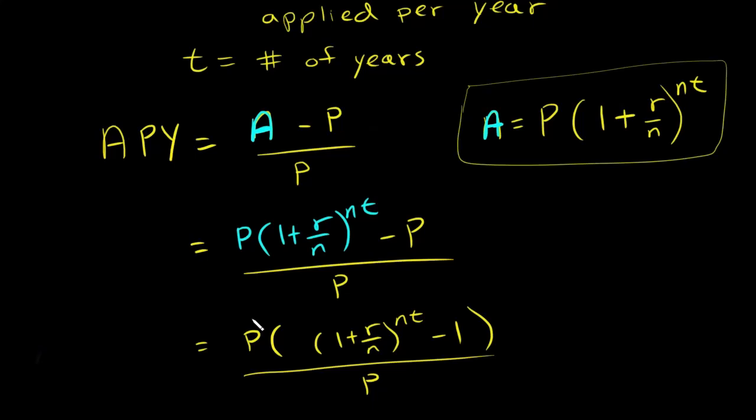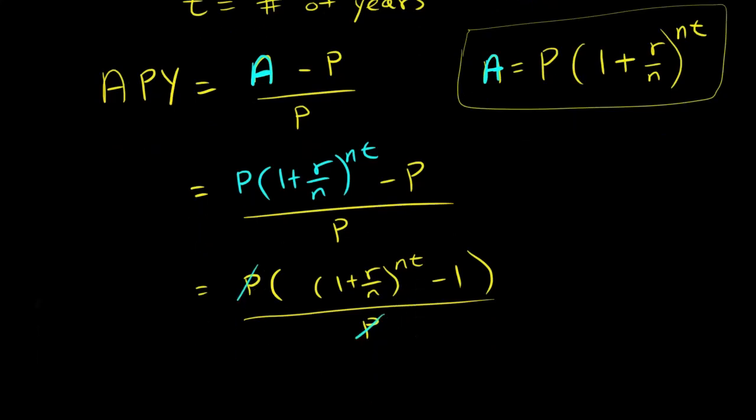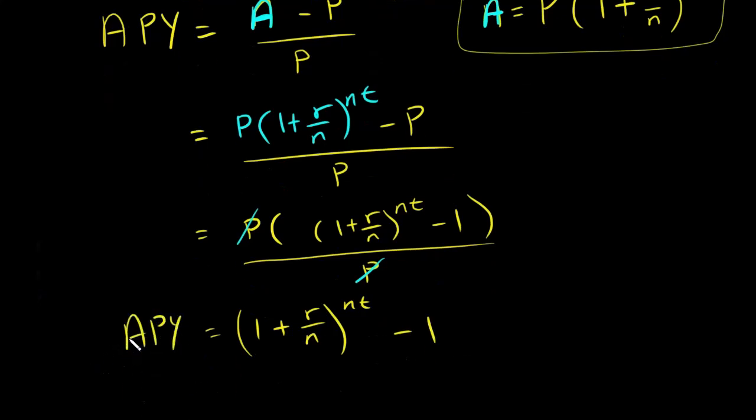I notice I have a cancellation. I can cancel the P's, and I'm left with (1 + R/N)^NT - 1. This is APY, and this is the formula that we had at the beginning of this video. So we have shown this formula.